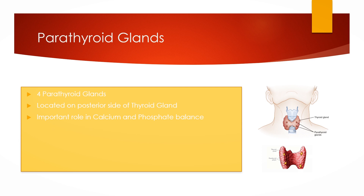Low ionized calcium level is a stimulus for the release of parathyroid hormone, which resultantly increases the level of calcium in the blood by increasing both osteoclast activity and renal tubular calcium reabsorption, and phosphate excretion in the urine. It also increases the activation of 25-hydroxy vitamin D in the kidneys to 1,25-dihydroxy vitamin D.